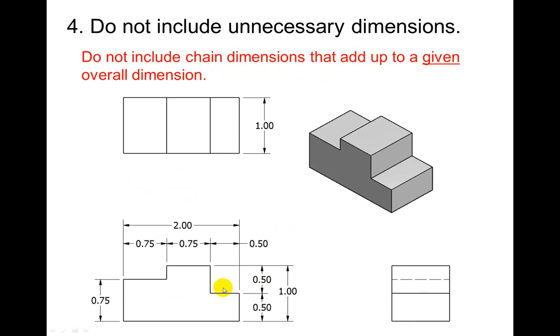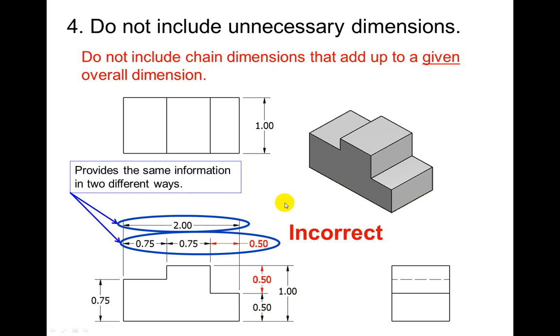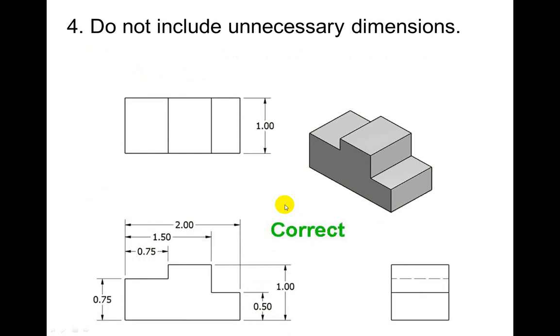You're not going to include chain dimensions that add up to a given overall dimension. You either want to do chain dimensions or you want to do the overalls but not the same. You can tell here that this dimension is one. These dimensions are already here. You don't need that overall dimension with it. That's why this is incorrect. Because obviously it's providing the same information twice. So the correct way again, this is the correct way.